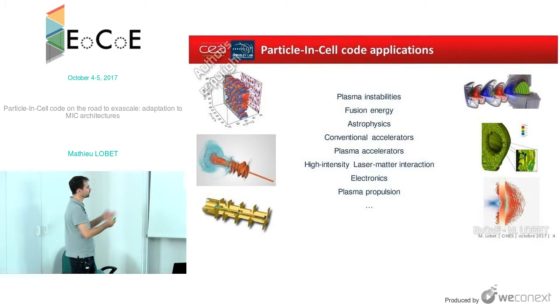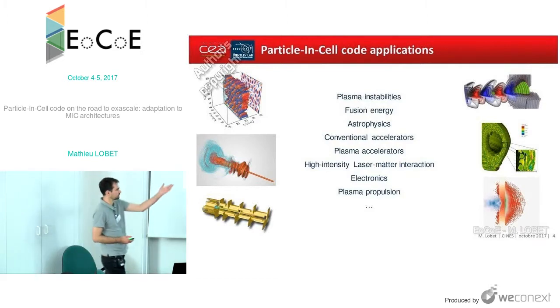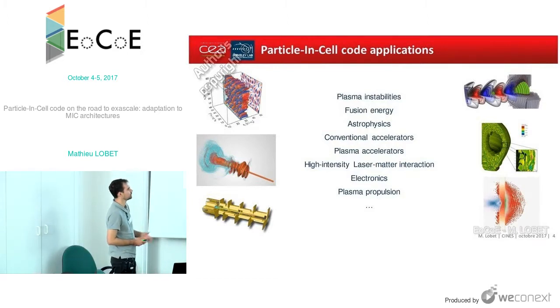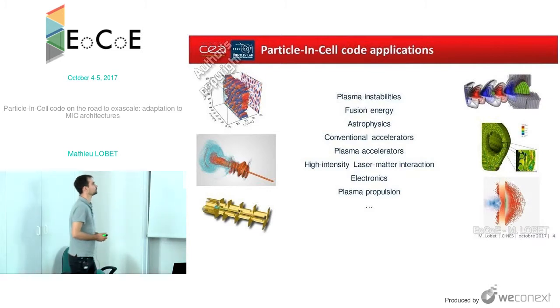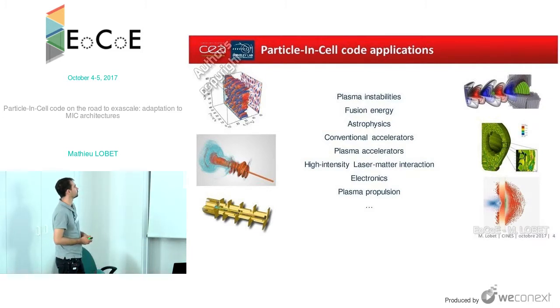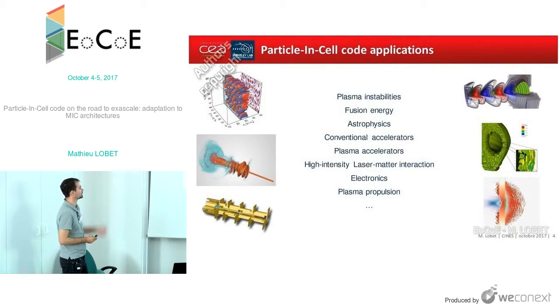Here you can find different images. You can, for instance, recognize an image from EGC that we had before in another talk. You have images from Warp, from Calder, or from Osiris.